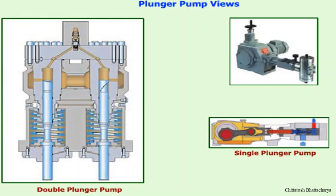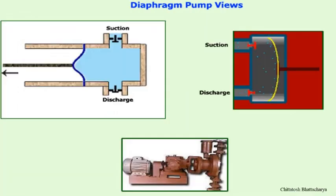Diaphragm pumps are another type of positive displacement pump used for handling high-density liquid. They operate at very slow speed because they handle high-density fluid. They have non-return type suction and discharge valves, and a diaphragm which is continuously moved to impart energy within the fluid being transmitted.